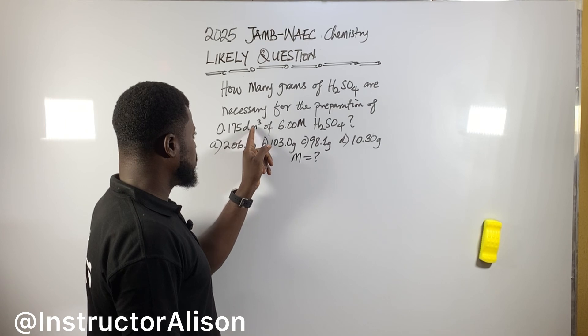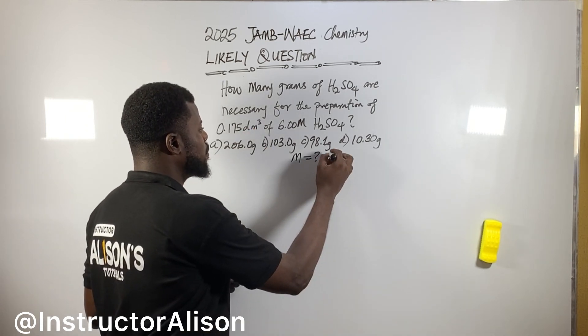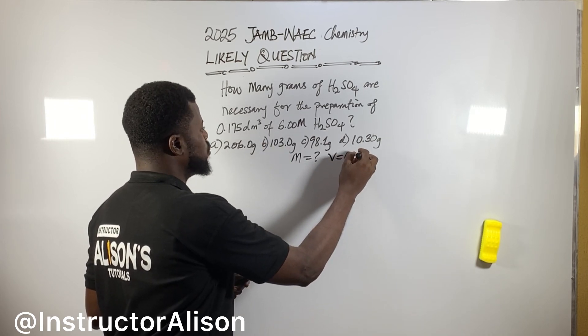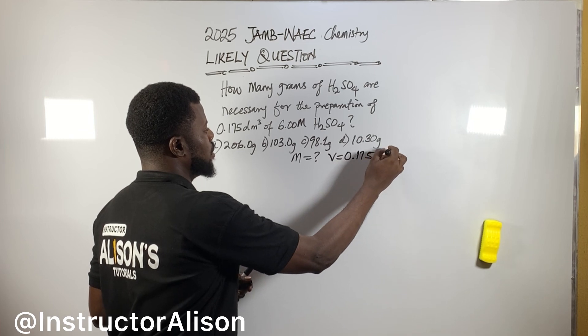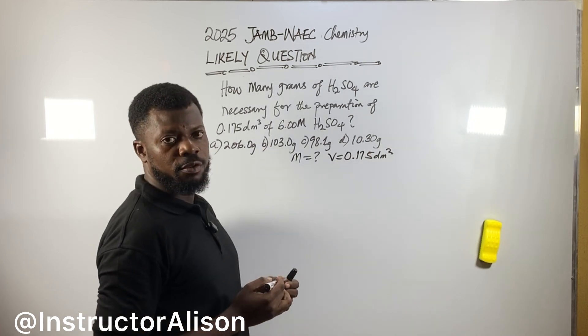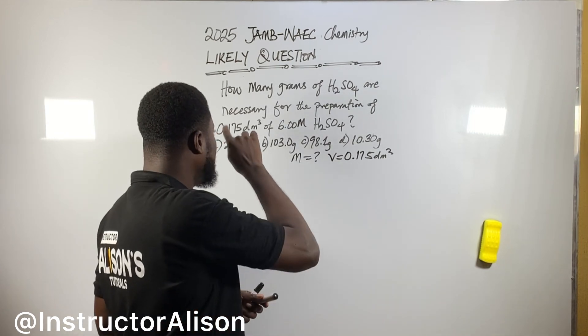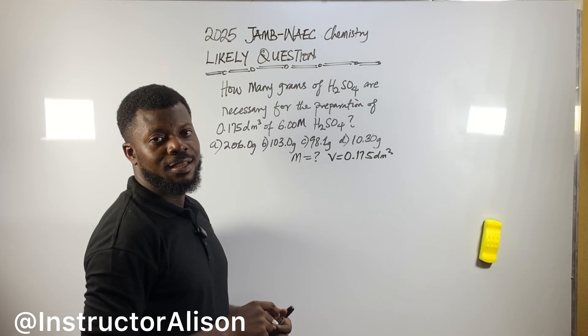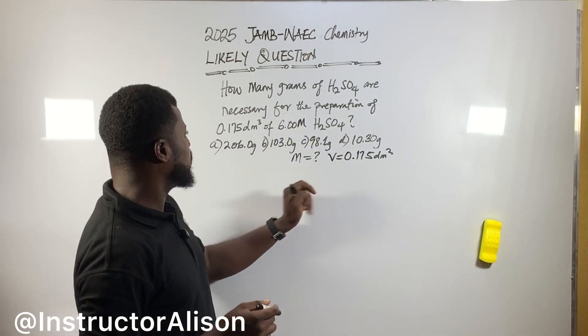0.175 dm³. Anytime I see dm³, I know it's volume. Volume will be dm³. It will not be only dm³, now it will be for volume. Even if I see something like cm³, I'm going to say it's volume. If I see liters, I'm going to say it's volume. If I see milliliters, I'm going to say it's volume. If I see meter cube, I'm going to say it's volume. So you understand. So, dm³ is volume.